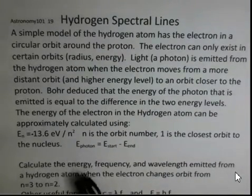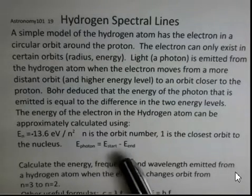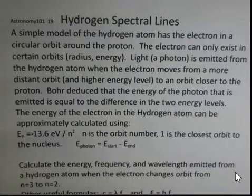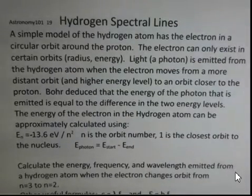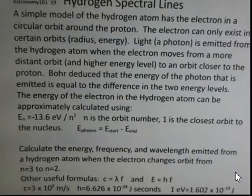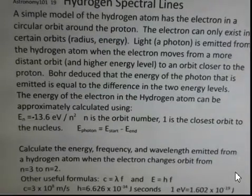The energy of the photon, then, is the energy that we start with minus the energy that we end with. It's a difference in energy. And we want to calculate the energy, the frequency, and the wavelength. When the electron starts at n equals three, that orbit, and ends up at the n equals two orbit.